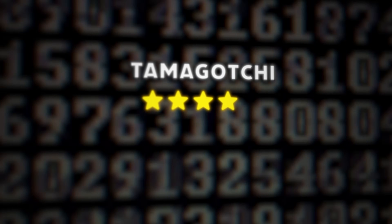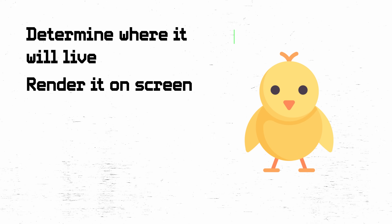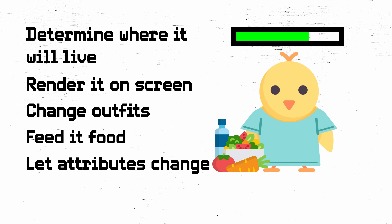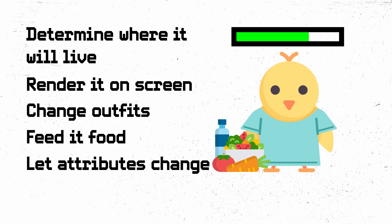Virtual Tamagotchi. If you had a Tamagotchi when you were younger, no introduction needed. For those under 12, Tamagotchis were these little virtual pets you could take care of. Breakdown: have a virtual character that can live somewhere, have it render on a screen, give the ability to change outfits, be able to feed it food, and allow this to change certain metrics of the pet. This is something you can just get started with and then endlessly customize until, well, it dies.